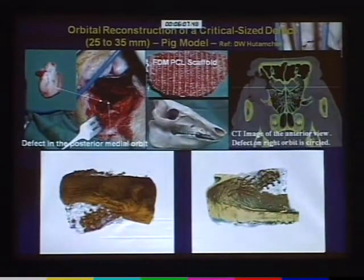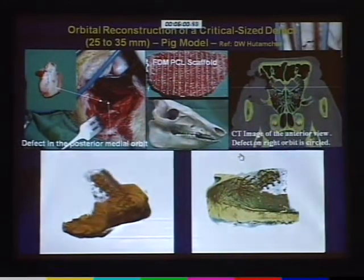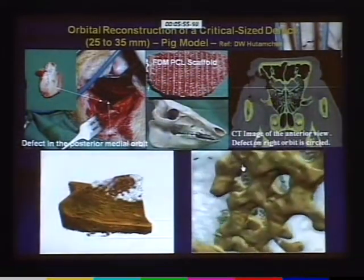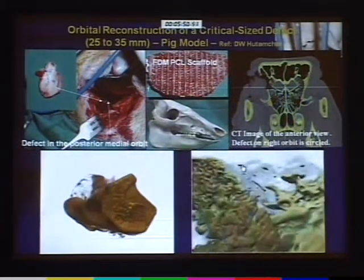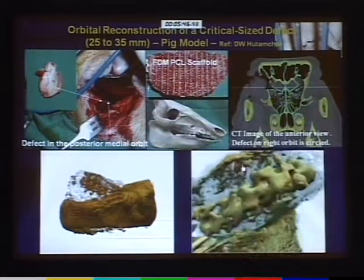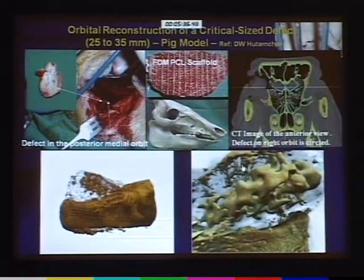We then went on into a larger animal model, which is something we are very proud of. We performed micro-CT to address one critical issue: does your bone grow only on the surface of the scaffold or into the scaffold? We now have sufficient evidence to demonstrate that the micro-architecture allows bone to be formed not only on the surface, but also internally.